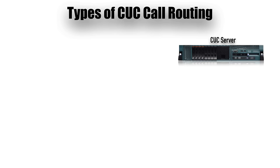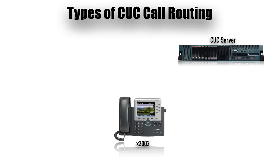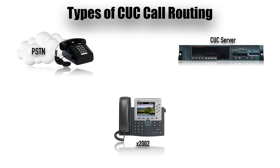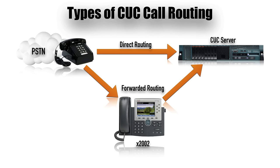Now let's look at the different types of call routing supported with Cisco Unity Connection. If a user on the PSTN calls the CUC server directly, it's answered with a generic greeting — 'Welcome to company XYZ.' That's called direct routing. But if that same PSTN user calls extension 2002 within the company and that user doesn't answer or is busy, the call is diverted to voicemail — that's called forwarded routing. The paradox is: instead of the generic system greeting, the caller hears the outgoing message specific to the user at extension 2002. How does CUC know to play that user's outgoing message instead of the generic greeting?